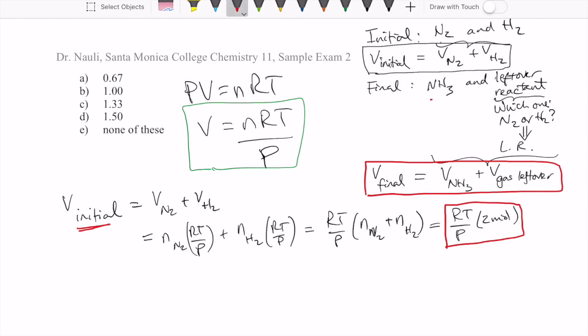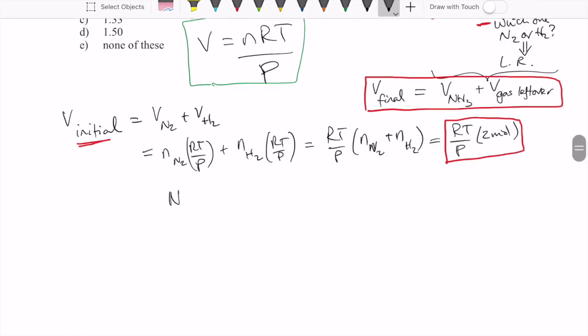For the volume final, we have to figure out the NH3, the product, and also which reactant is left over. Both of those require us to figure out our limiting reactant. So I'm going to write out my reaction: N2, 3H2, 2NH3. And we were told that both of these are one mole. The quick way to determine limiting reactant is we can divide each of these by its stoichiometric coefficients.